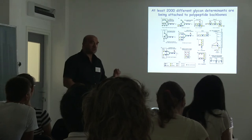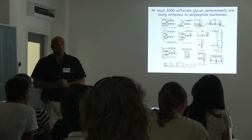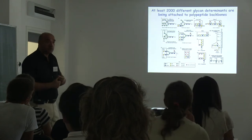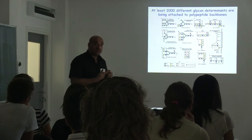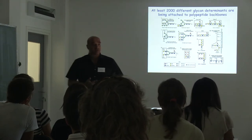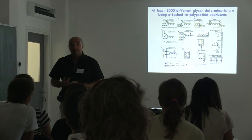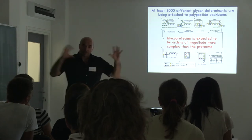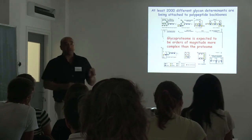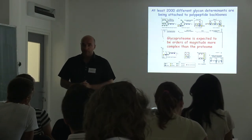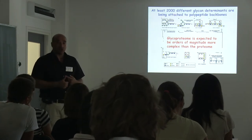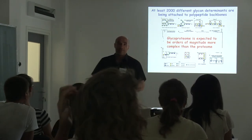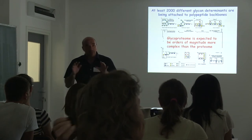There are at least 2,000 different blocks of glycans which are being added to polypeptide backbones. When you think about nucleic acids with four nucleotides and proteins with 20 amino acids, you then add more than 2,000 different glycan blocks to proteins. The glycoproteome — the set of all glycoproteins in the body — is several orders of magnitude more complex than the proteome. We have something like 20,000 genes, between 100 and 150,000 proteins, and between 10 and 100 million different glycoproteins. The level of complexity is enormous.